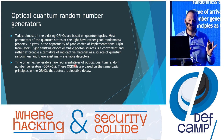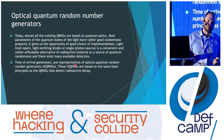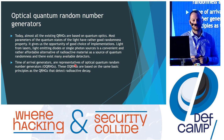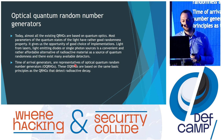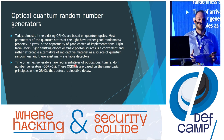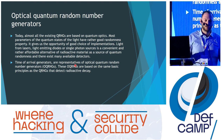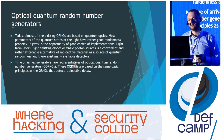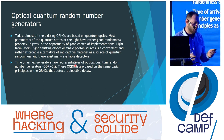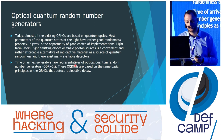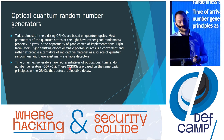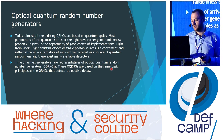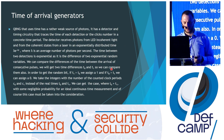Today, almost all existing quantum random number generators are based on quantum optics, because the parameters of the quantum state of light have very good randomness properties. They give us the opportunity for very good implementations. Light from lasers, light-emitting diodes, and single photons are very affordable and convenient alternatives to radioactive material and are a wonderful source of quantum randomness. Today we will use time-of-arrival generators, which are representatives of optical quantum random number generators. Their principles are very similar to QRNGs that use radioactive decay.